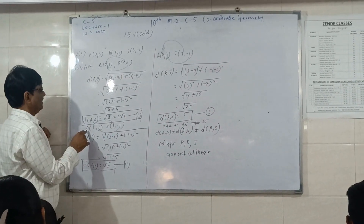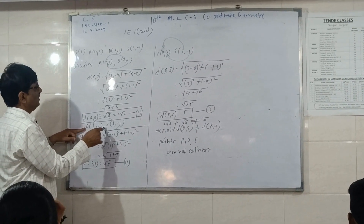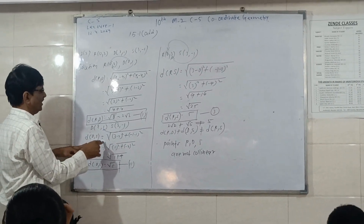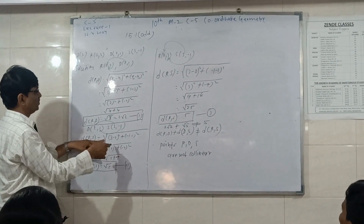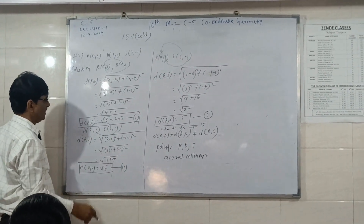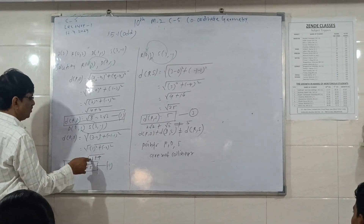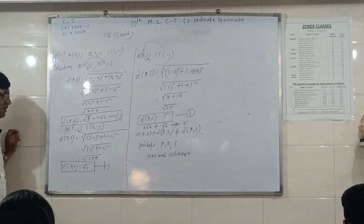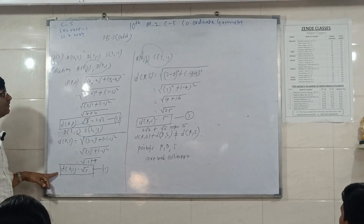Second: D(2, 1), S(3, minus 1). Therefore, distance DS is equal to X2 minus 3 minus 2, and minus 1 minus 1. So 1 squared plus minus 2 squared. So 1 squared plus 4, that is root 5. Distance DS is equal to root 5.